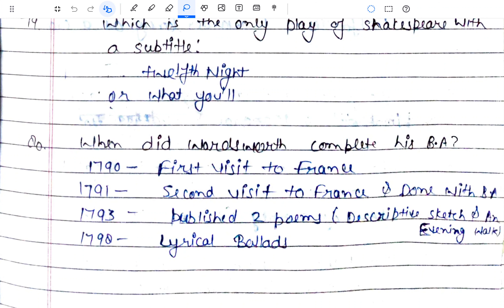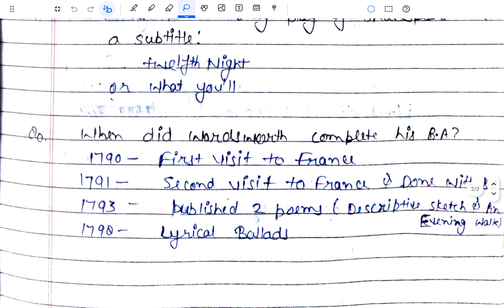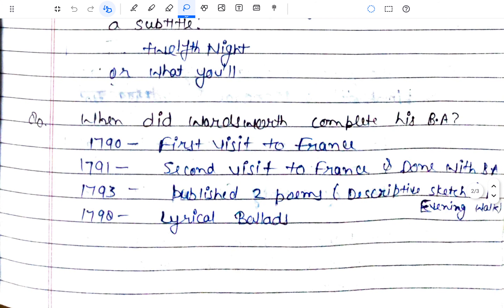When did Wordsworth complete his BA? In 1790, he made his first visit to France, where he fell in love with Annette Vallon, a surgeon's daughter, and they had a daughter named Caroline. In 1791, during his second visit to France, he completed his BA. In 1793, two poems were published — 'Descriptive Sketches' and 'Evening Walk', written in heroic couplets. And in 1798, 'Lyrical Ballads' was published.